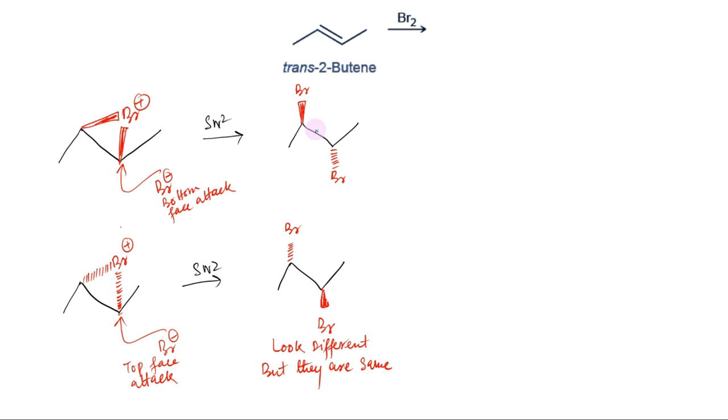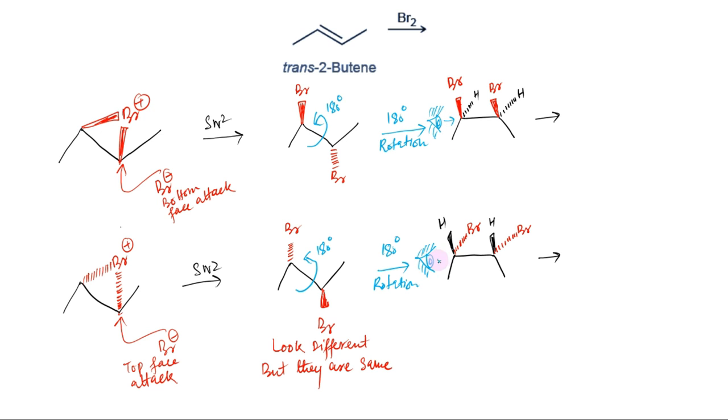We know that Fischer projections are eclipsed conformations, therefore the methyl groups must be on same side when converting these to Fischer projections. For this, C2-C3 bond must be rotated 180 degrees. In doing so, bromines on C2-C3 come on same side. We can write the hydrogens opposite to bromines, just like we did before in case of cis isomer. Now looking through C2-C3 bond, we can write the Fischer projections. In this case, on both C2-C3, we can see the bromines on right of the observer and hydrogens on left. Whereas in other case, hydrogens are on right side on both C2-C3 and bromines on left side.